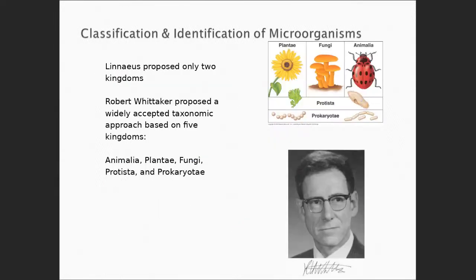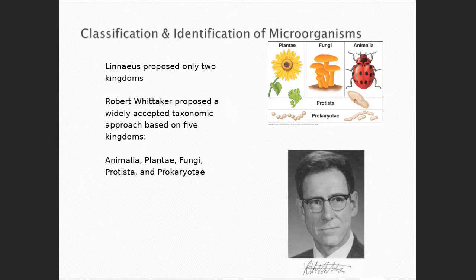Lots of other changes happened. A researcher basically said there are five kingdoms. The five kingdoms proposed were: everything bacterial — whether archaea or bacteria — he put into the kingdom Prokaryote. Then things were Protista, Fungi, Plants, and Animalia.